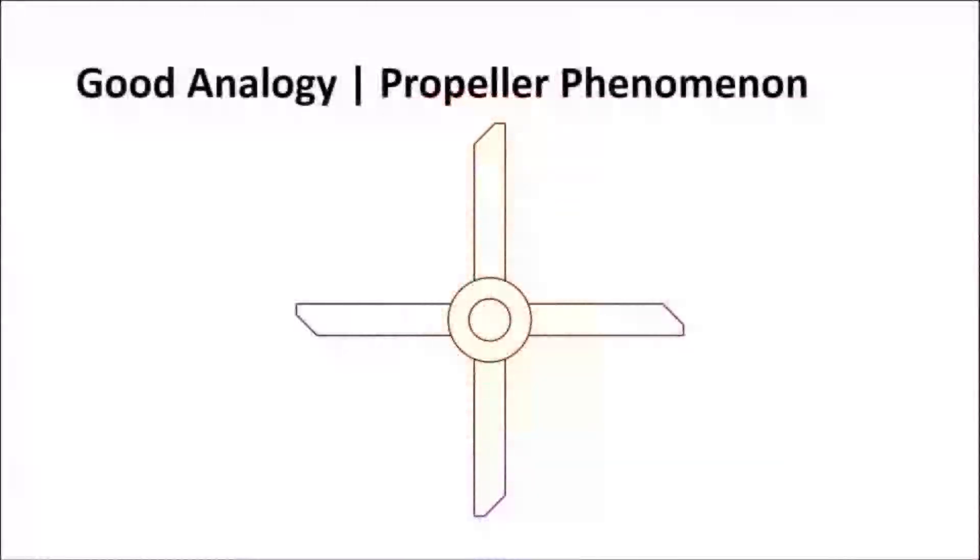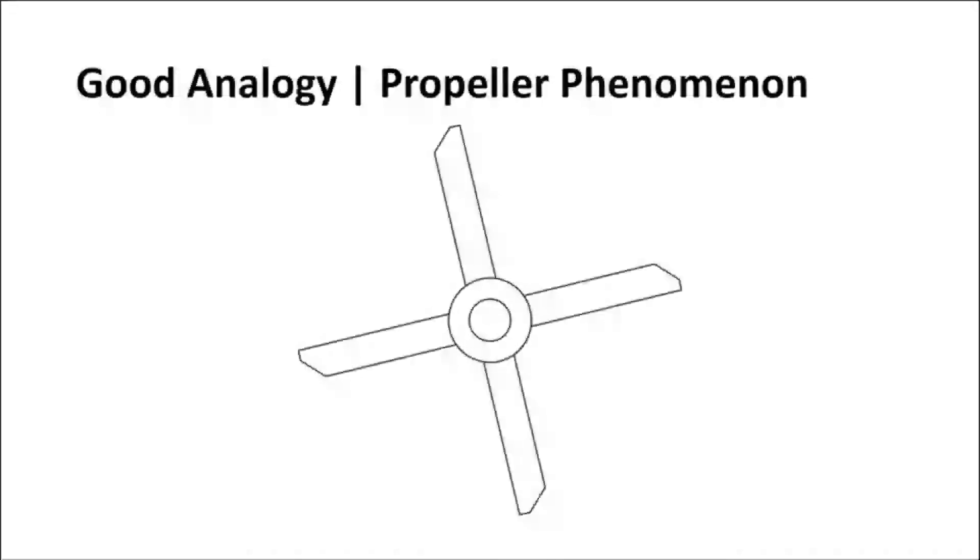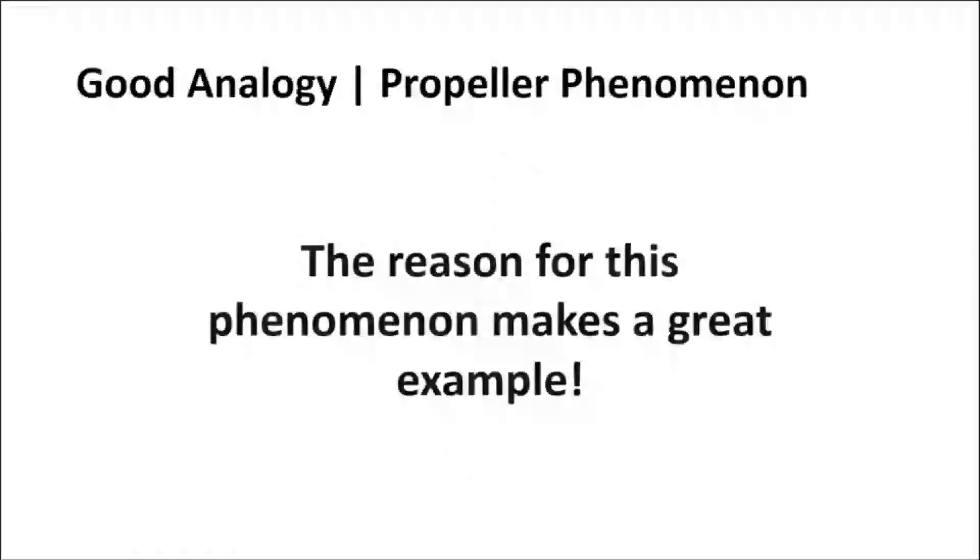In our paper we use an analogy for talking about mixers and quadrature signals in a way that most people should be able to relate to. If you've ever seen a video where the propeller of a plane starts up, you may have noticed that it appears to spin in one direction, stops for a moment, and starts spinning in the other direction. This phenomenon and the reason it happens works well as an analogy for what we're doing.